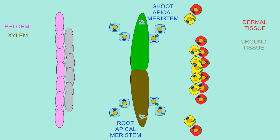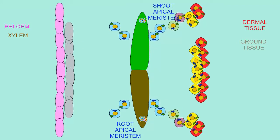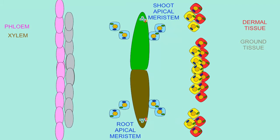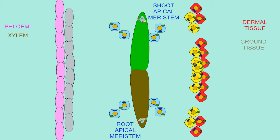When a cell in the meristem divides, a meristem cell remains so that this meristem continually replaces itself.